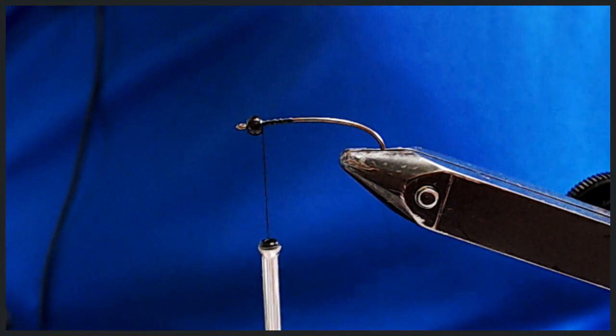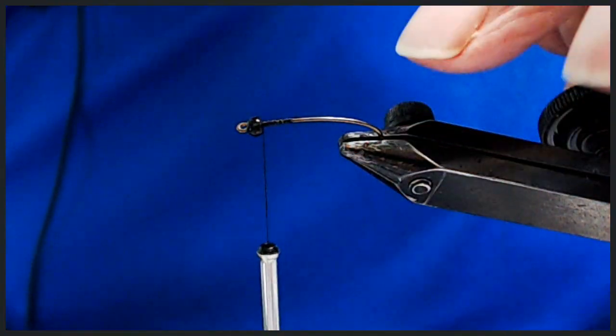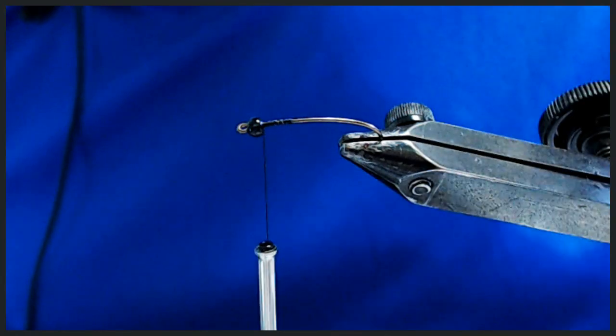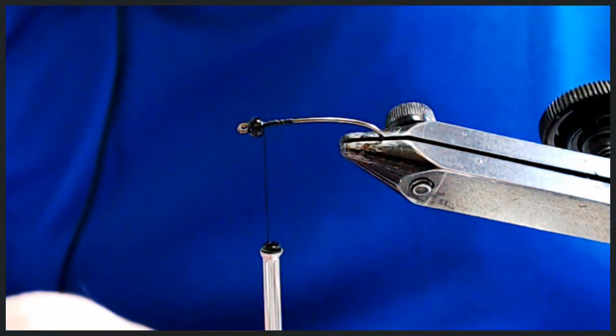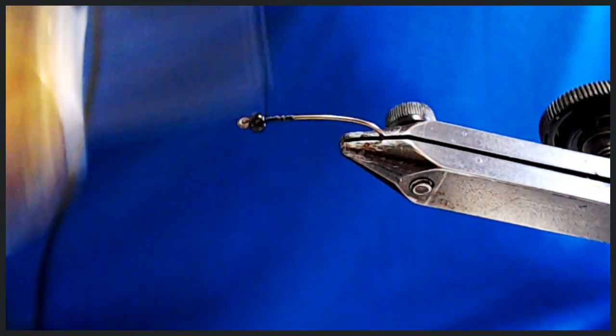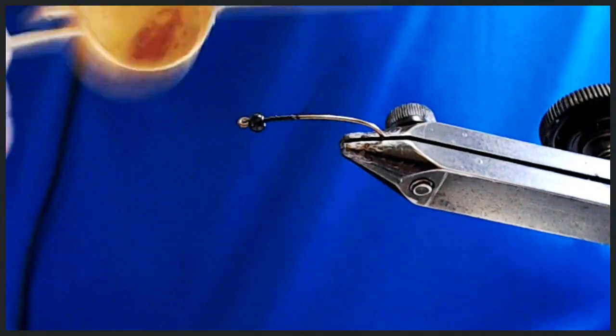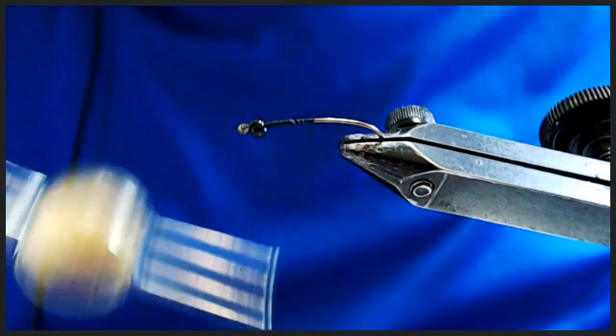What I'm going to use here for a hook is a 200R Tiamco. I have a tungsten bead on and I'm using a black thread. What I'll do is I'll wind the thread all the way to the back.